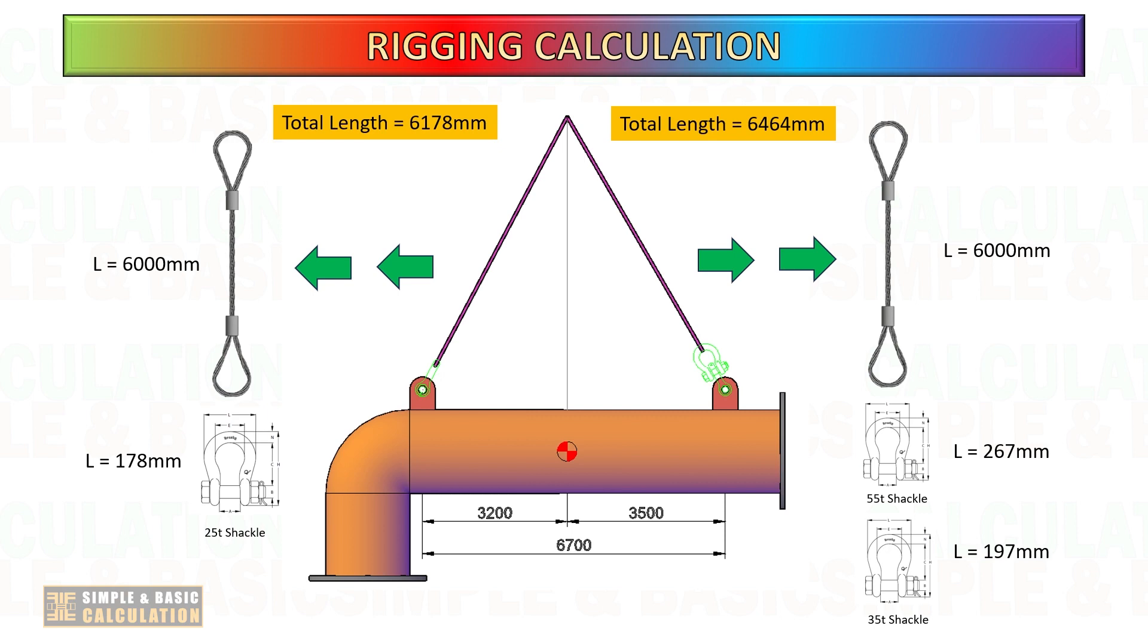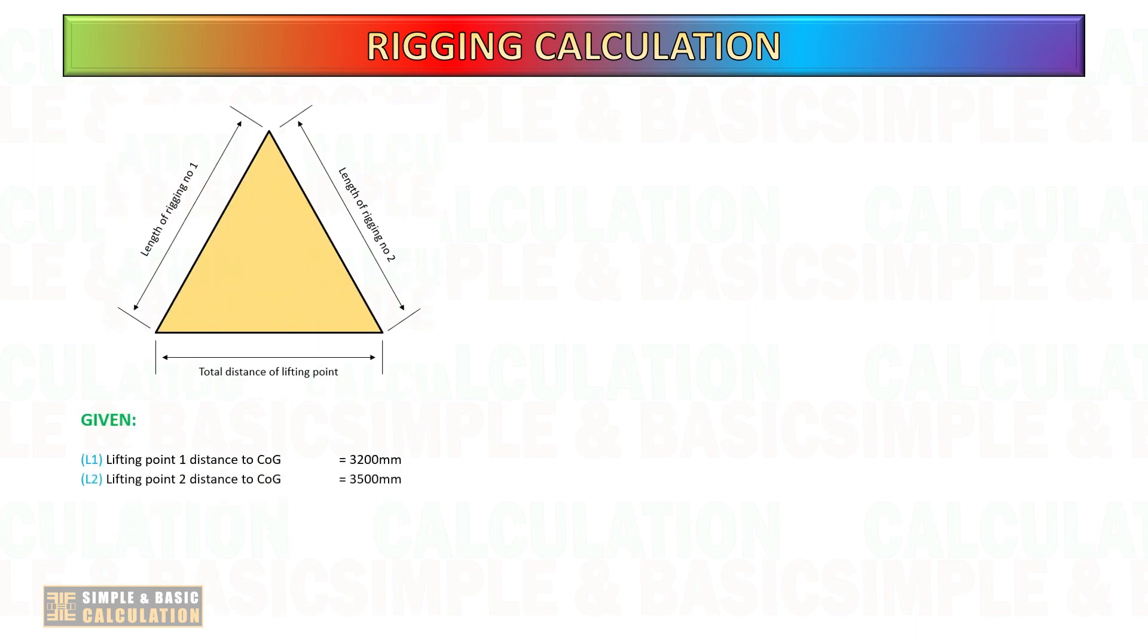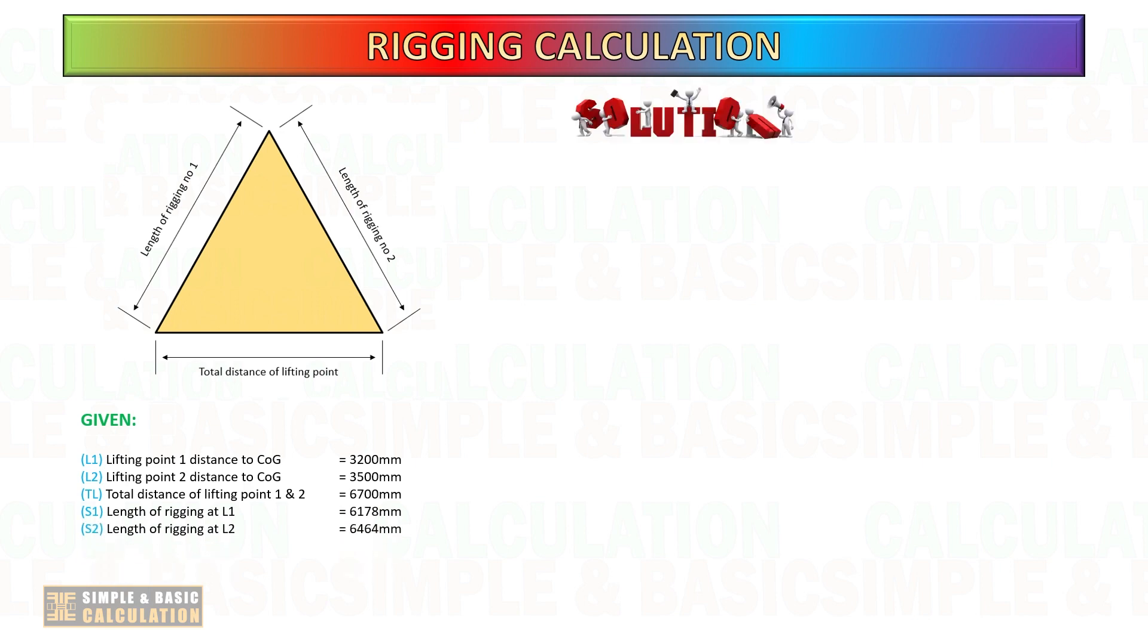We know already that this rigging combination is not balanced. Based on previous calculation, the good combination of rigging is 35-ton and 25-ton shackle. For the purpose of calculation, let us do this example. All the same formula we will use.